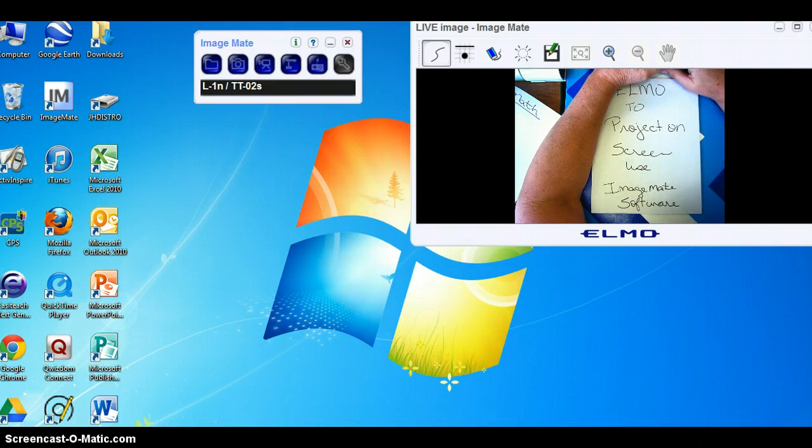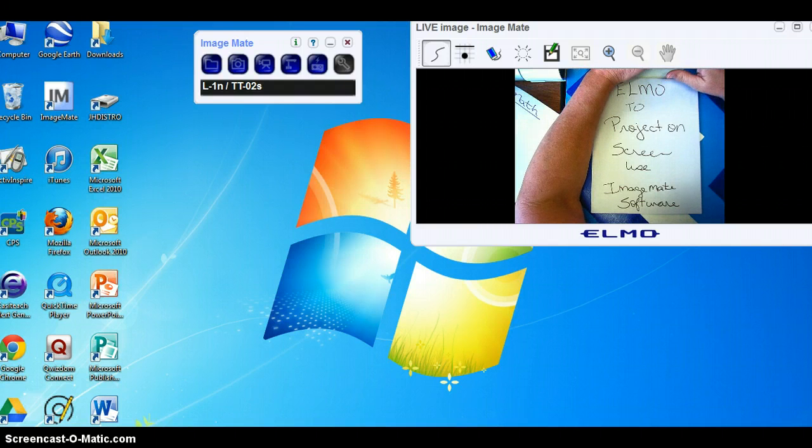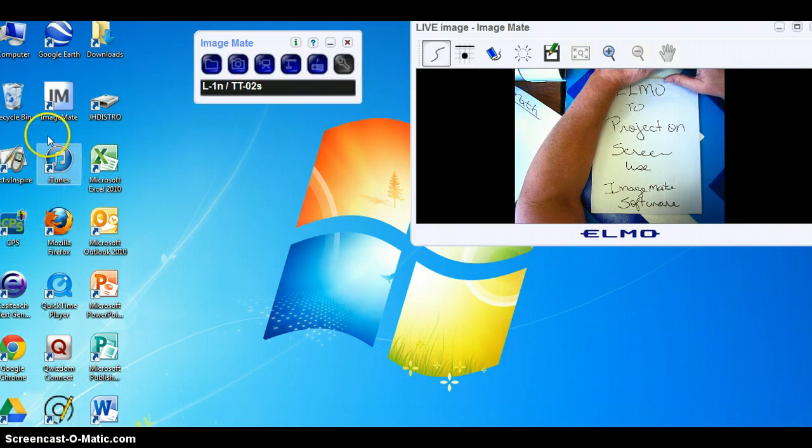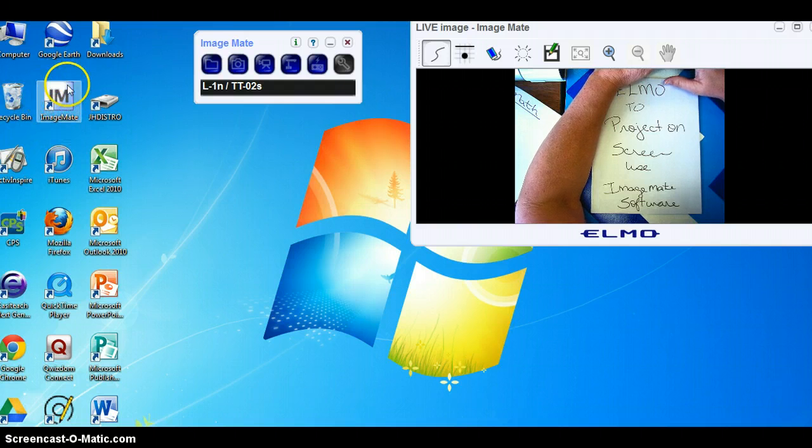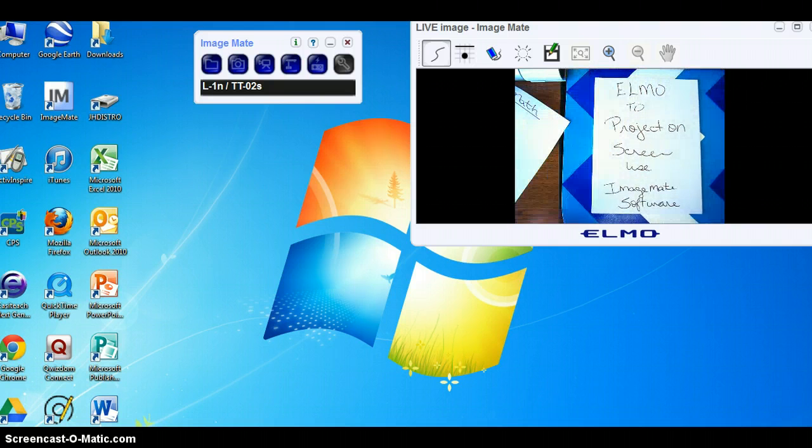What we are going to do is use our Elmos and be able to work on paper and then see it on the computer screen so that we can capture it as a video. I am using the software called ImageMate that's on your computer. If it's not on your desktop, you can always go to your start menu at the very bottom and hit it from there.